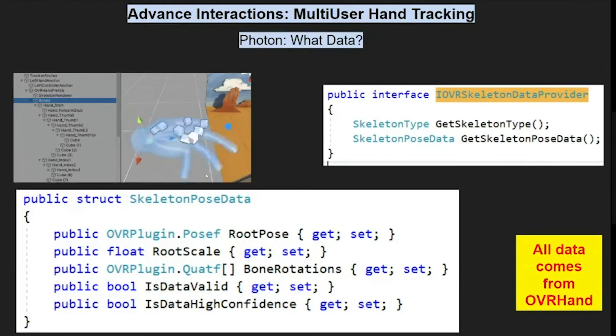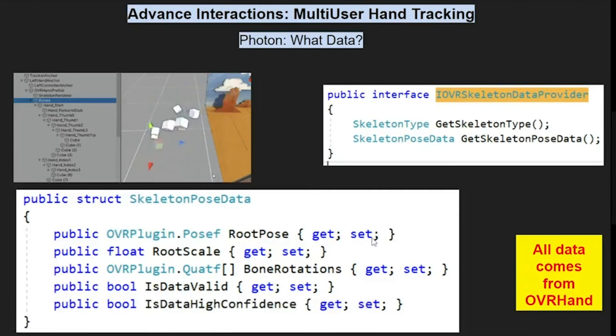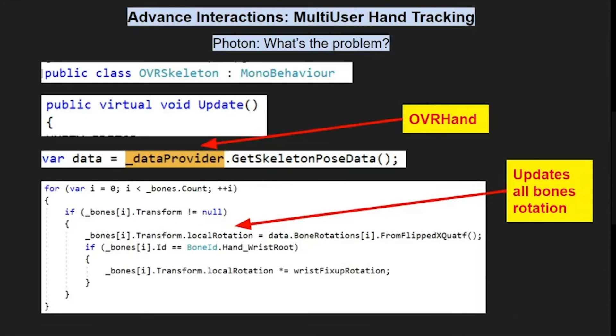Everything comes from the OVRHand component. The OVRHand component is also an IOVRSkeletonDataProvider, and it has a struct with all of the data regarding the bones. It looks like this - the root pose has the position of the transform and rotation of the hand itself, the scale. It has a list of all 24 rotations of your bones.